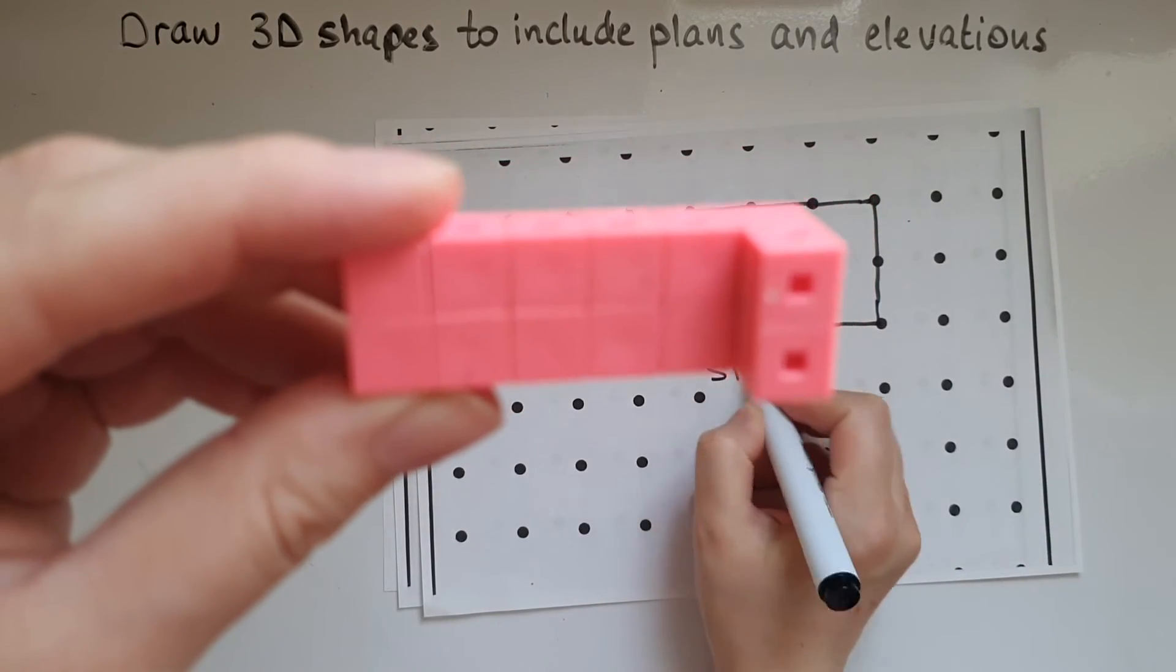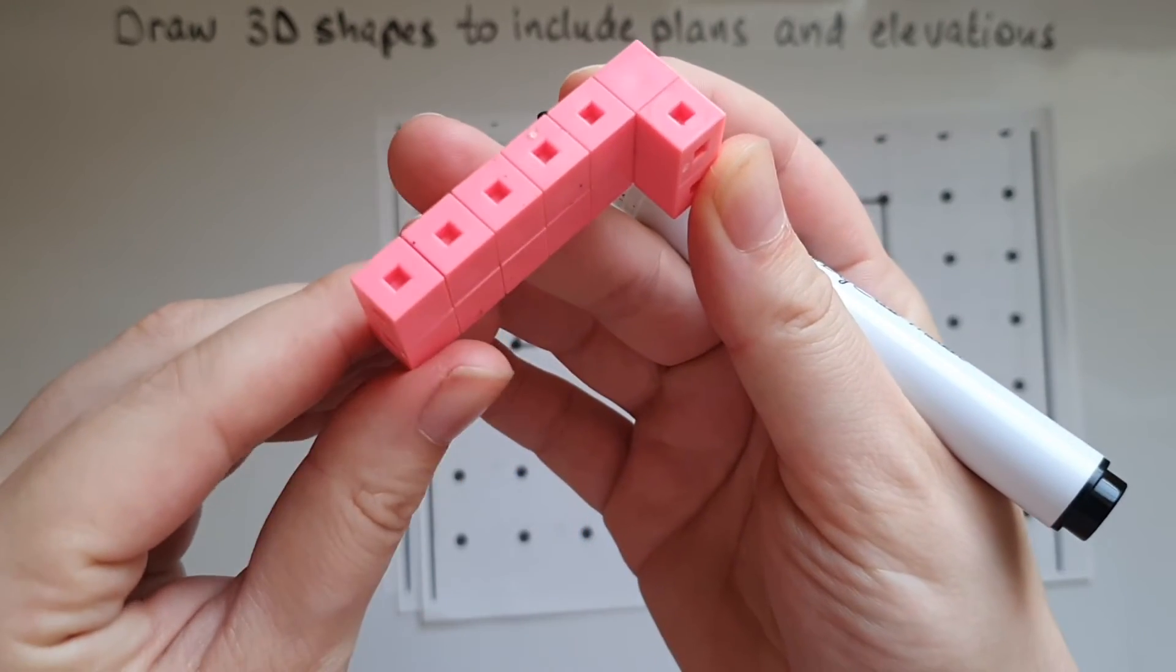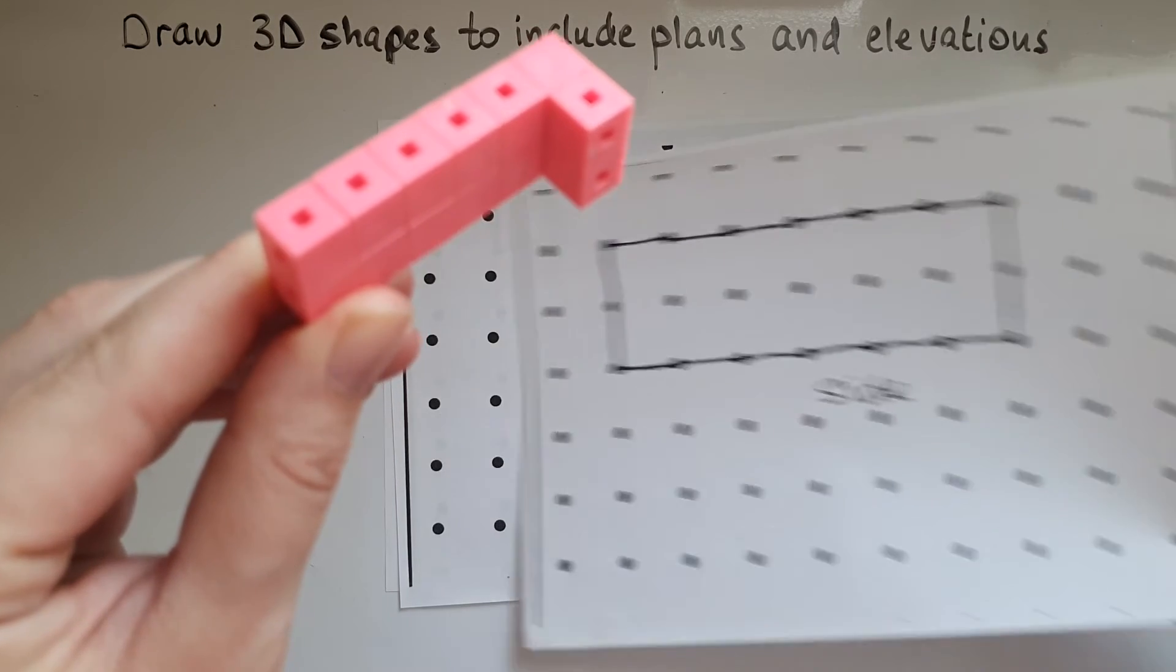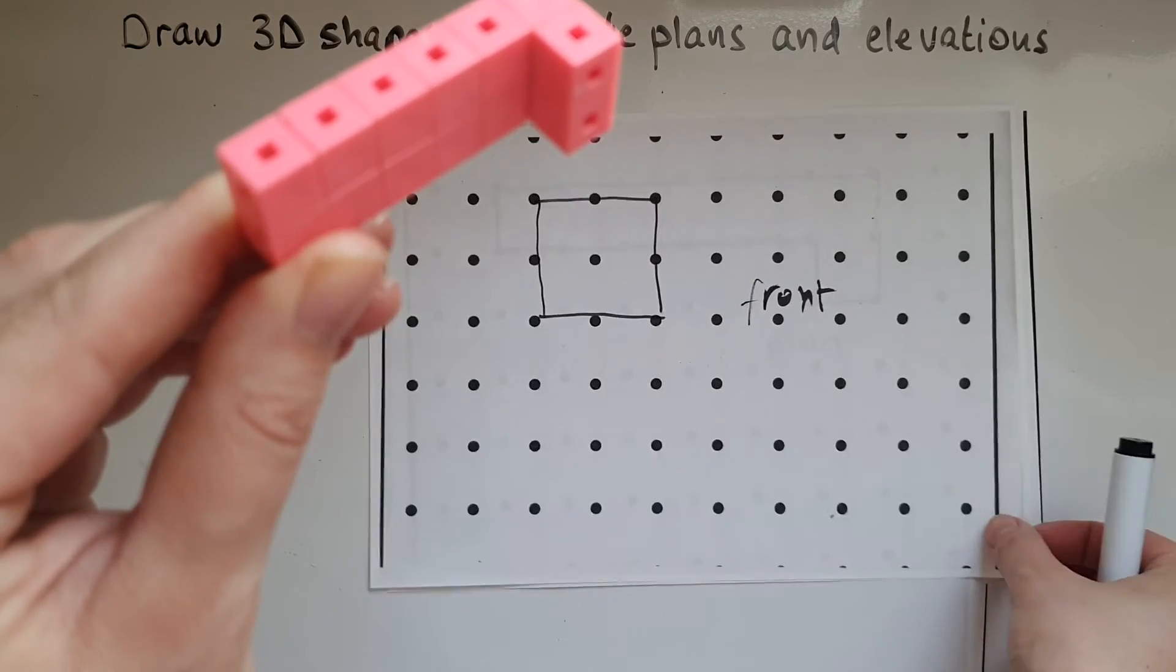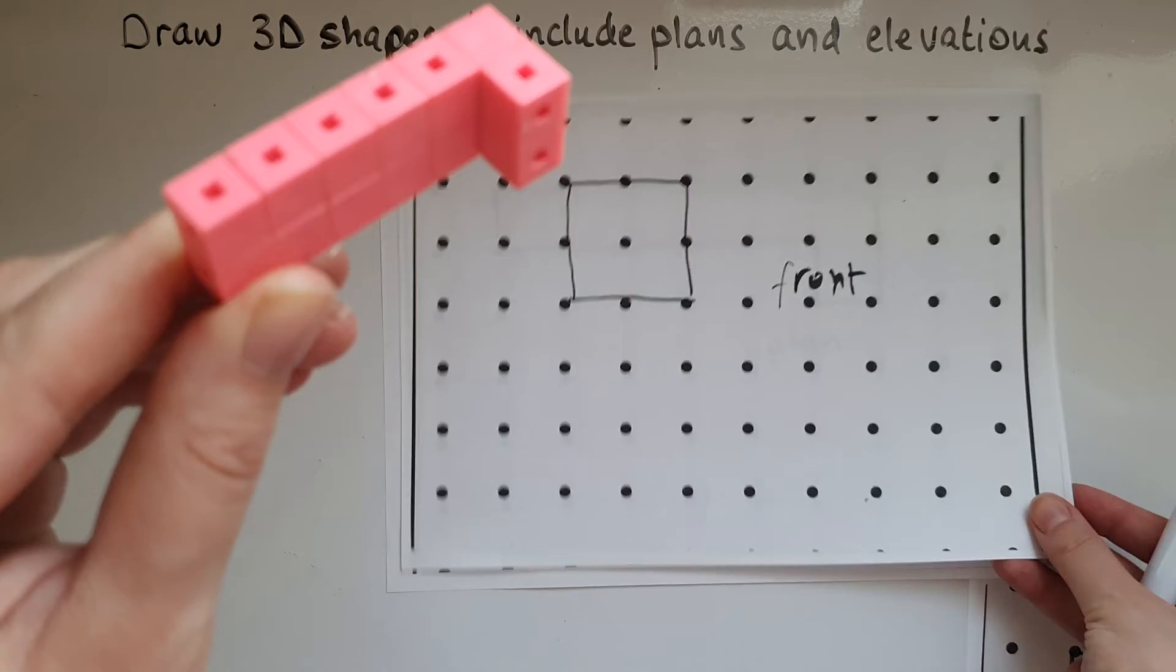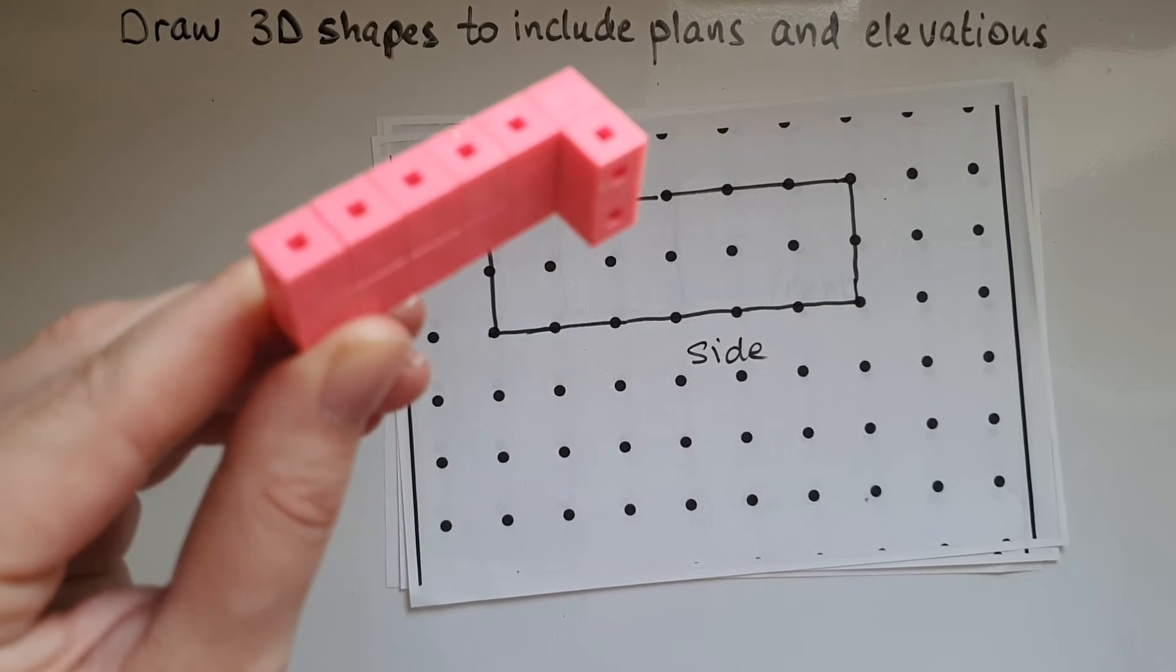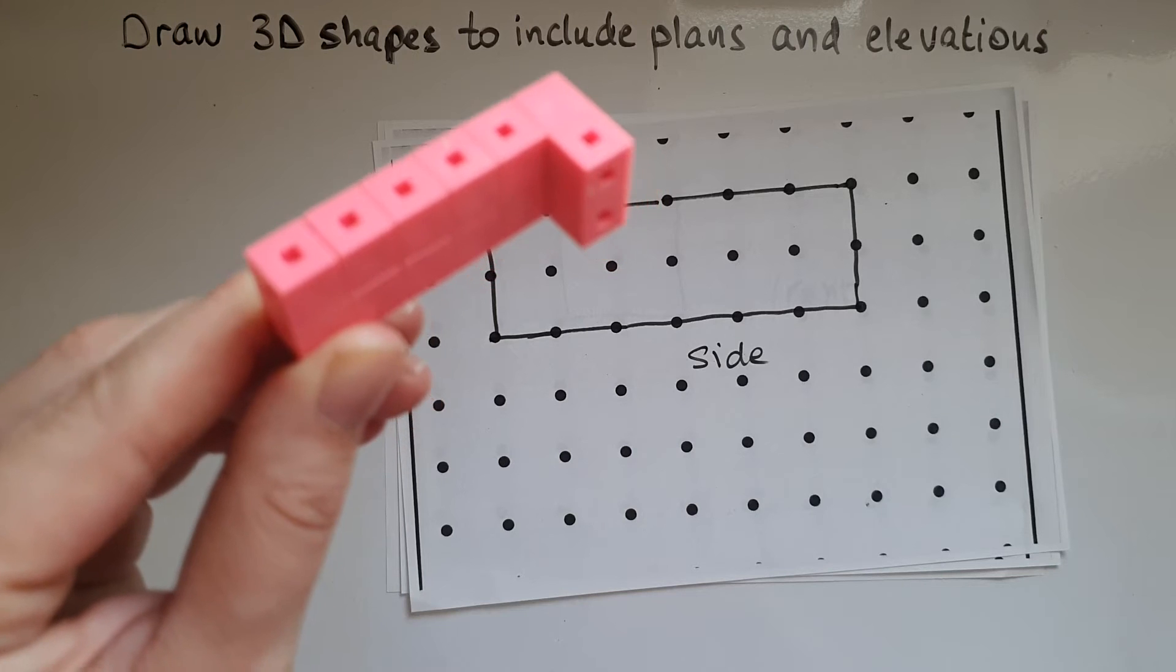This is the side elevation. So we'll turn it to its original position again and we'll look at these once more. So these are the plan and the side and front elevation for this shape.